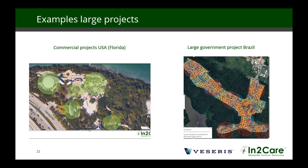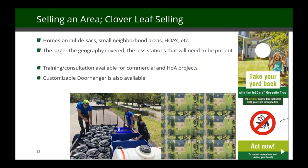Here are examples of two large-scale projects — one in Florida and one in Brazil — where we used fewer than 10 IntuCare stations per acre and got really good control. IntuCare works extremely well in a single location or single household, but it also shines in larger areas like cul-de-sacs. We have literature — cloverleafs and other materials — you can put on door handles. There's a lot of customizable material on the IntuCare site to help you grow your business.